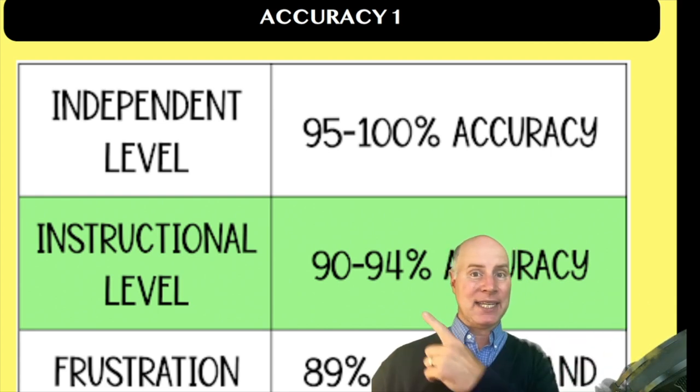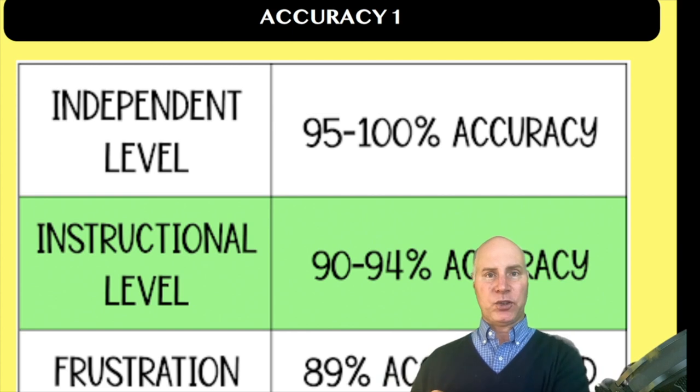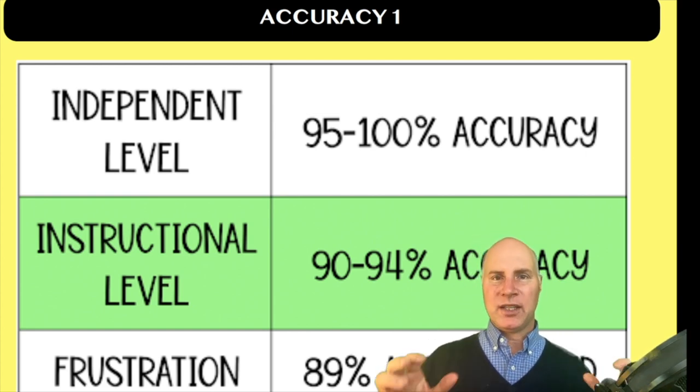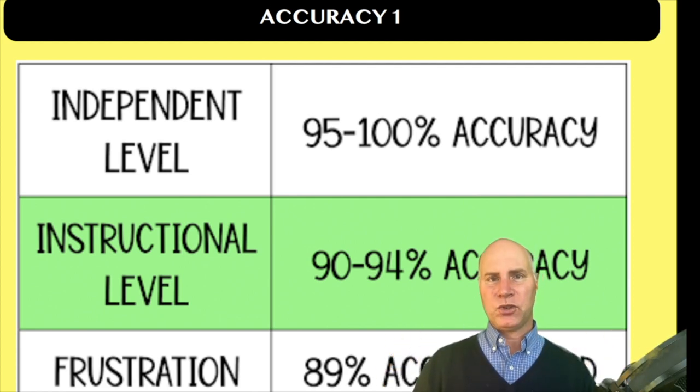And we have these levels for accuracy. You're going to see those levels: the independent, the instructional, and the frustrational. Now independent, I want you to remember this. Independent, this means that the text that the student's reading, if they get 95% correct or more, it means that it's a good text for independent reading.